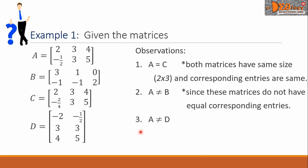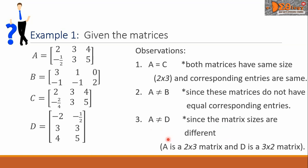Number three, matrix A is not equal to matrix D, since the matrix sizes are different. Matrix A is a 2 by 3 matrix, and matrix D is a 3 by 2 matrix.